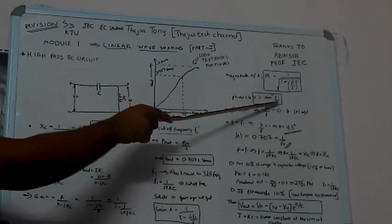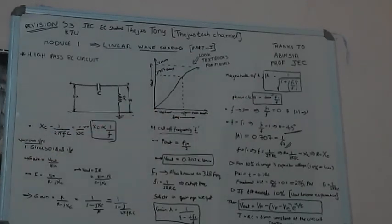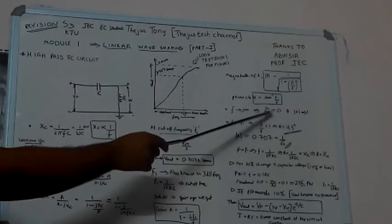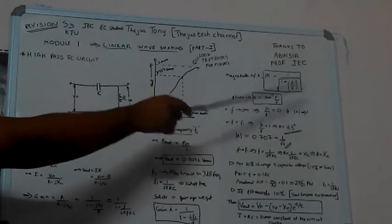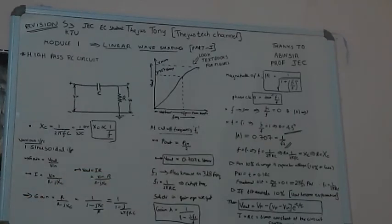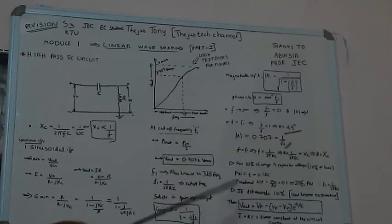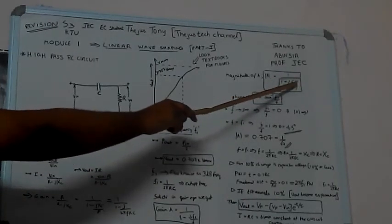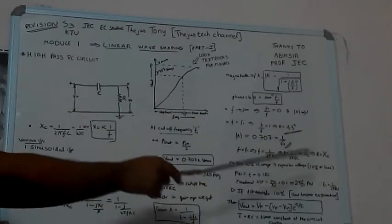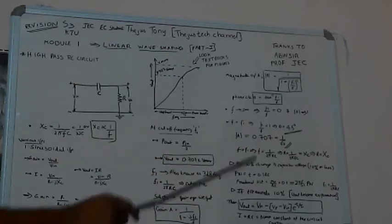If f tends to infinity, f1/f will be 0. At that condition, the phase angle will be equal to 45 degrees, since tan inverse of 1 is 45°. At that time, magnitude of A — putting f1/f equal to 1 — will be 1 by √2, and the value of 1/√2 is 0.707.